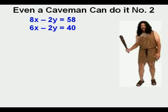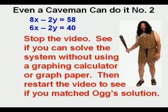We have time for one more system to solve. We have 8x minus 2y equals 58, and 6x minus 2y equals 40. You try it. Stop the video. See if you can solve the system without using a calculator or a graph paper. Then, restart the video to see if you matched Og's solution.